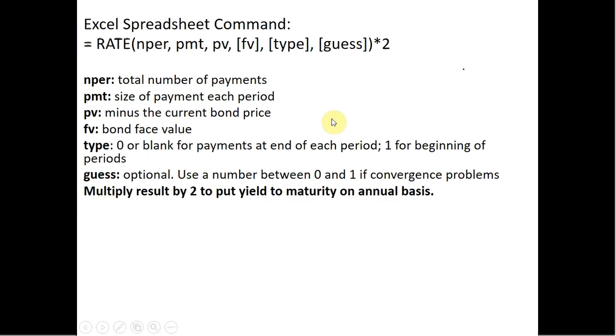We need to do one other thing. We need to multiply this times two here. We need to multiply the result by two to put the yield to maturity on the annual basis.